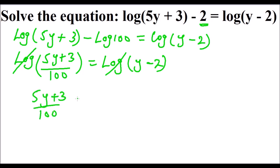Multiply both sides by 100. So we end up with 5y + 3. When you multiply this by 100, it is 100y - 200.